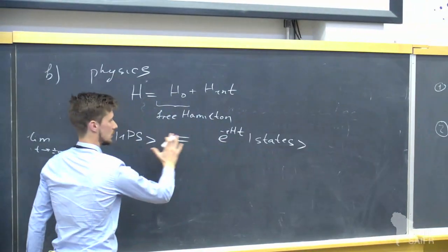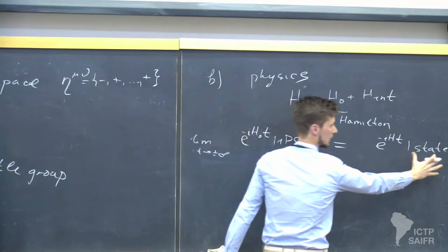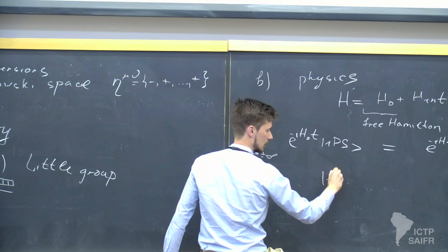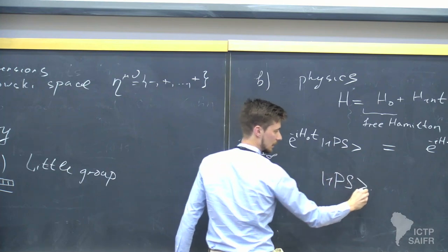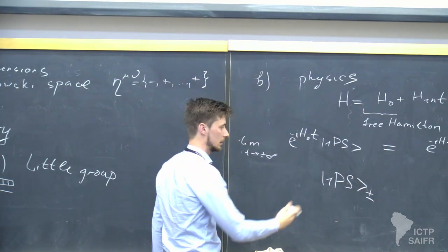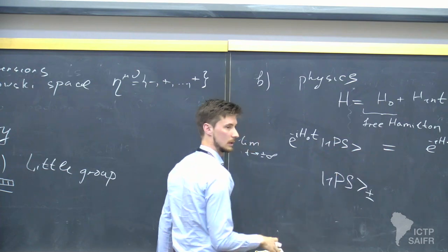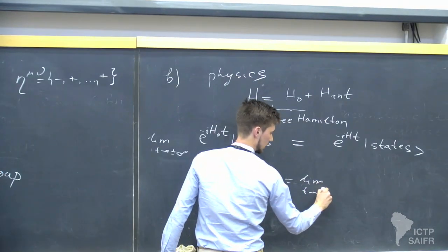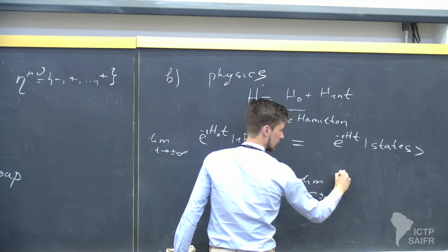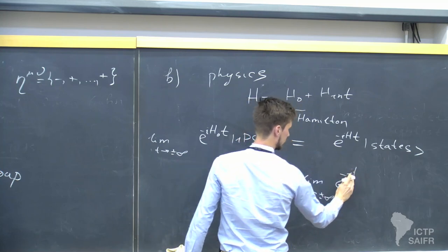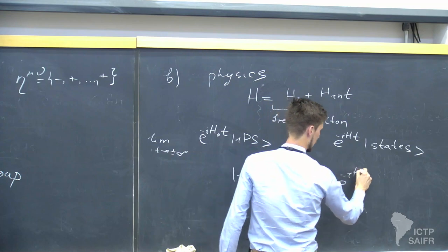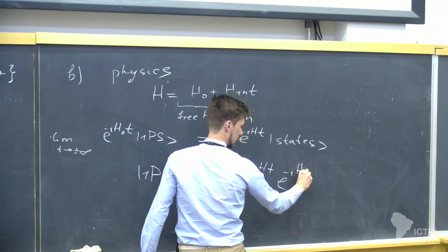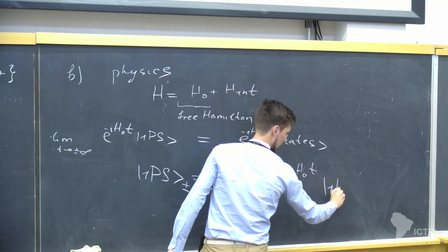From this equation, I can move things to the left-hand side and define the actual asymptotic states. I'll call them one-particle states referring to plus or minus — meaning in the far future or the far past — as the limit of time going to plus or minus infinity of e^{-iHt} e^{iH_0 t} acting on the one-particle states.